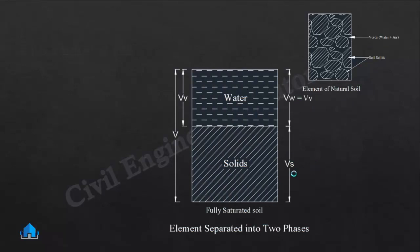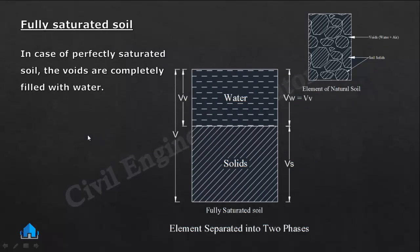If we take perfectly saturated soil or fully saturated soil, the voids are completely filled with water. Volume of voids are completely filled with water — this is volume of water. So volume of water equals volume of voids (Vw = Vv). This is fully saturated soil, and here the element is also separated into two phases: solid and water.